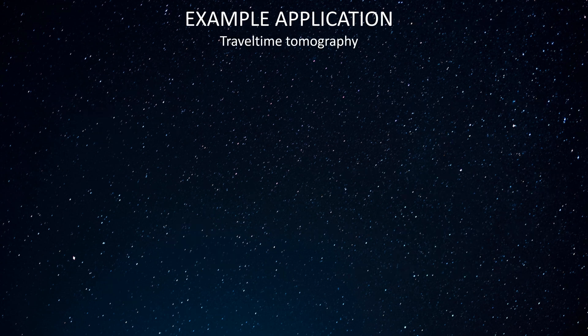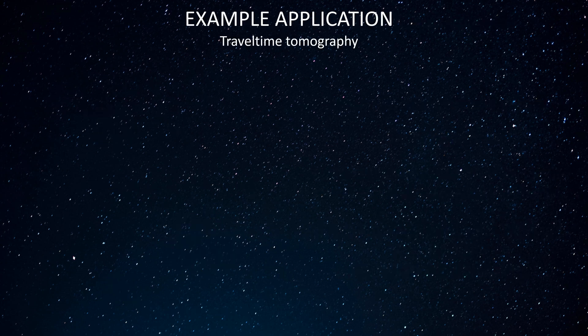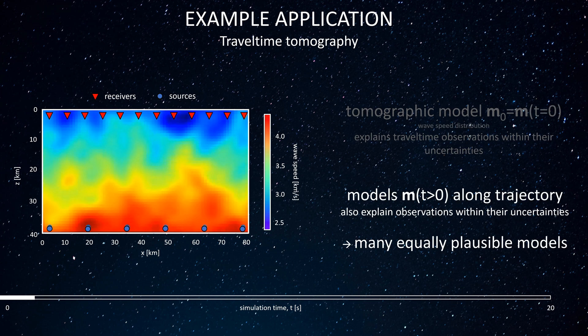We translate this by analogy to an example application, which is travel time tomography. In this tomography, sources at the bottom emit waves recorded by receivers at the surface after some travel time. On the basis of those travel times, the distribution of wave speed can be reconstructed. We then let the null space shuttle take off.